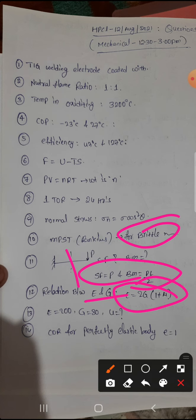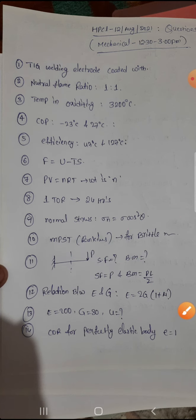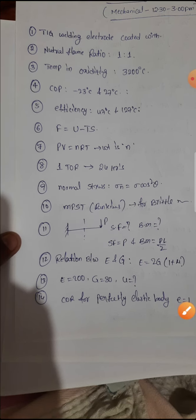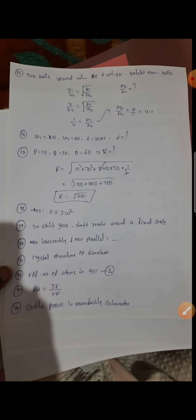E is equal to G into 2 times 1 plus mu. E gave, G gave, and they asked mu. For perfectly elastic body, E is equal to 1. These are the questions, and we will see some other questions.